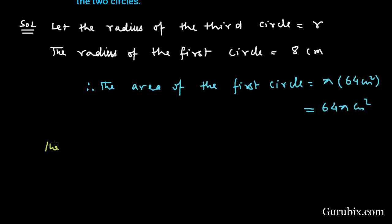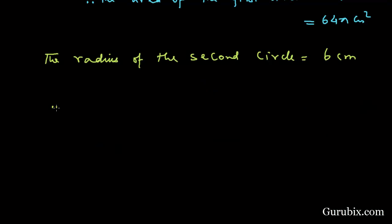The radius of the second circle is given as 6 cm. Therefore the area of the second circle will be 36 pi cm squared.